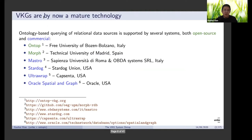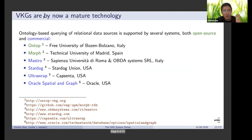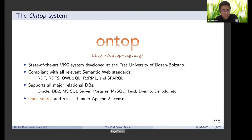VKG or OBDA has already been a mature technology for roughly 10 years. There are several implementations in the community, like OnTop, Mastro from the university, as well as Stardog, Ultraripe, and Oracle from companies. Both OnTop and Mastro have also been commercialized, and Ultraripe as well. So it's already a big community. In particular, this talk is about OnTop — our system.